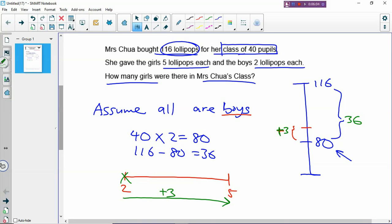How many times must you press the button? You take 36 floors divided by 3. You will need to press 12 times, which means you will have to replace 12 boys with 12 girls. So how many girls are there in Mrs. Chua's class? The answer is 12.